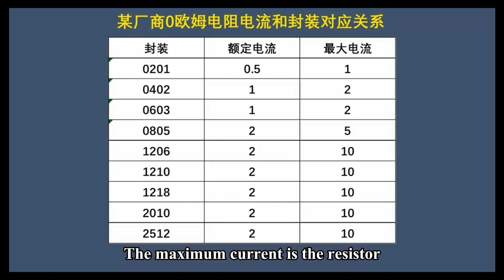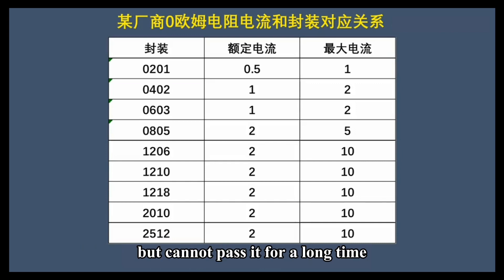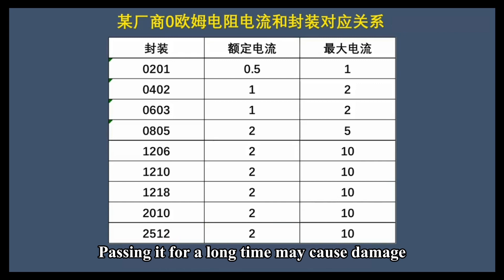The maximum current is the value of current the resistor can pass for a short time, but cannot pass for a long time. Passing it for a long time may cause damage.